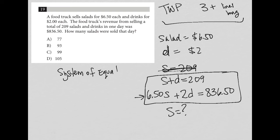So hopefully as you see more of these, you'll get accustomed to just expecting that this is setting me up for a system of equations. So I'm going to write it again, a little bit more space this time. 6.50S plus 2D equals 836.50.